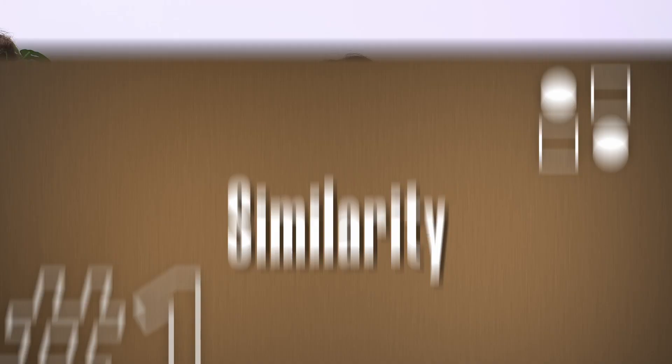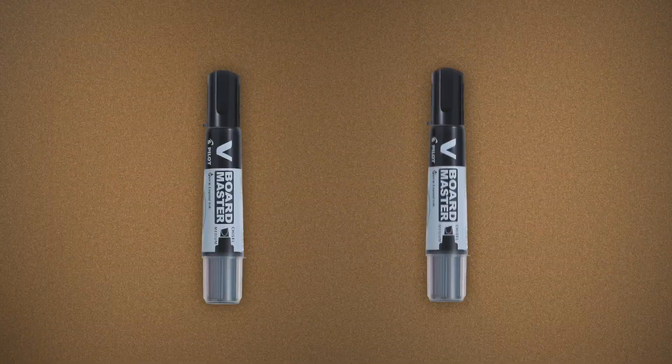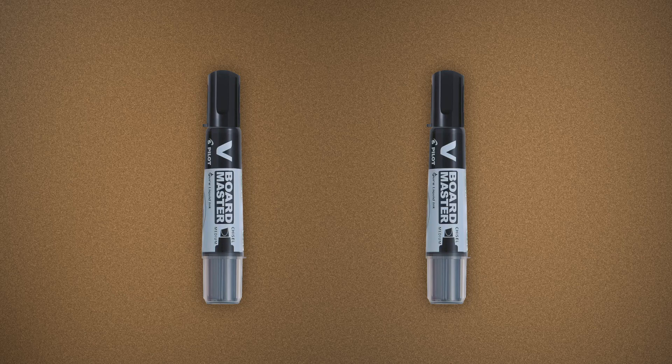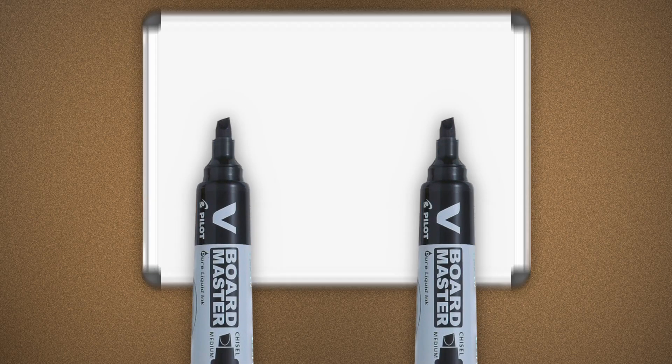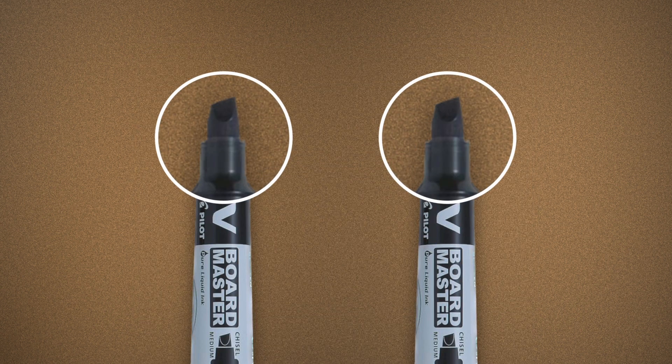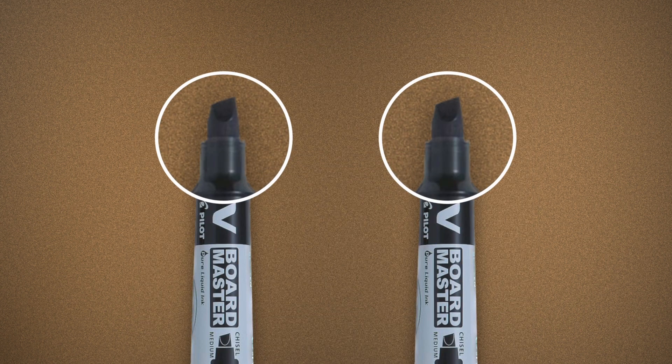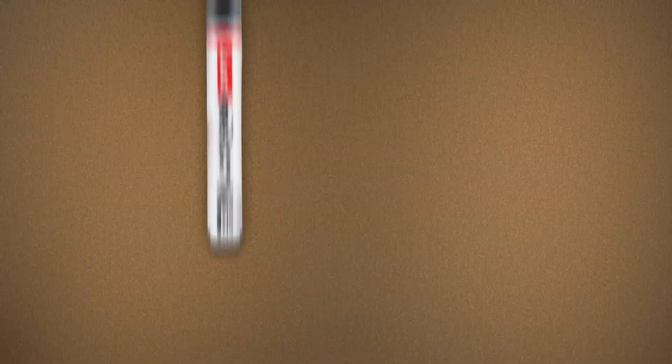Let's start with similarity. Similar objects tend to have the same functionality and our mind perceives them as so. When we look at these two markers, we know automatically that if this marker can write on a whiteboard and has a thick tip, then next time I see one in the marker shop, I know what it does because they look pretty similar.